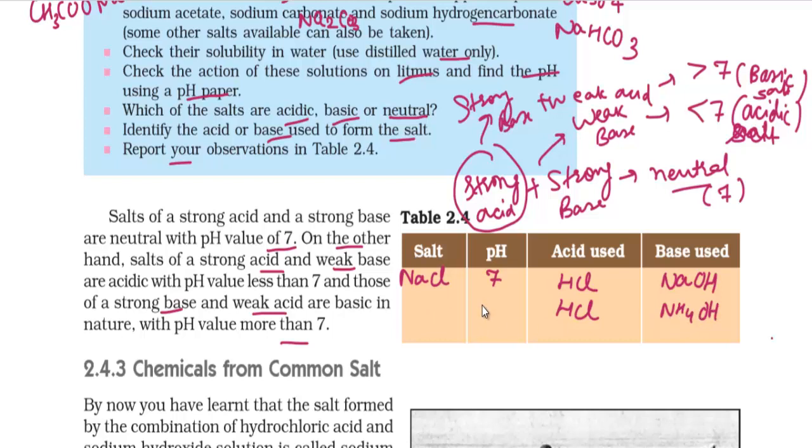Next, pH will be less than 7, and this will be acidic salt. And the salt will be NH4Cl.